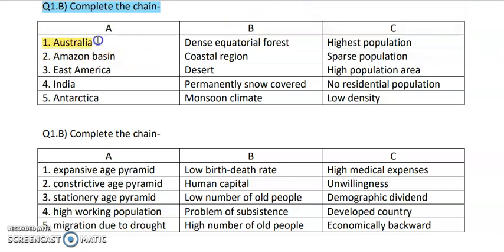First is Australia. Australia has a desert area, so from column B the desert is the right choice for Australia. Australia is a very large continent but the population there is very low, so the answer for column C is sparse population.